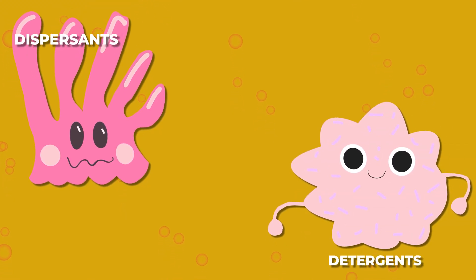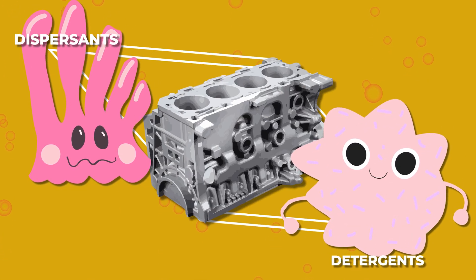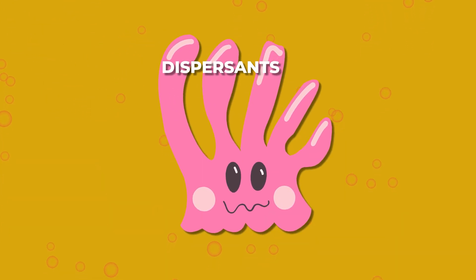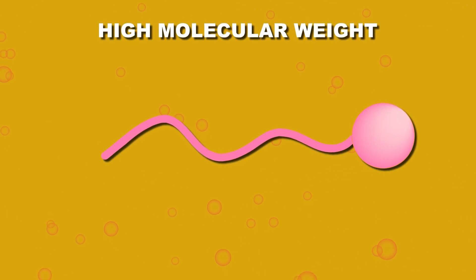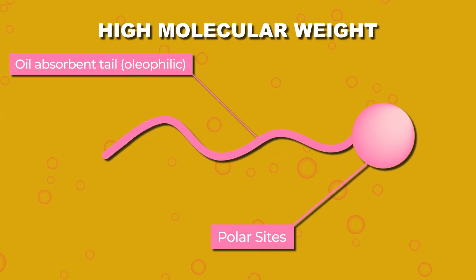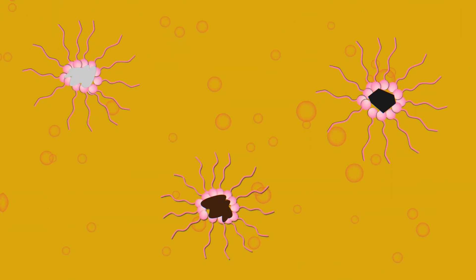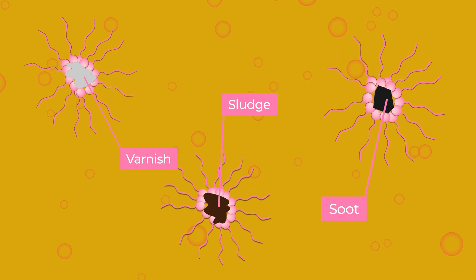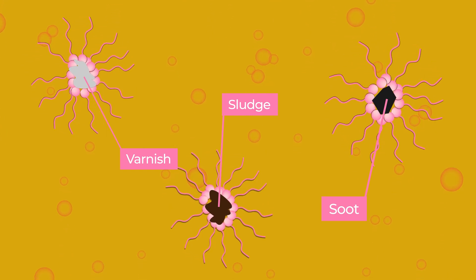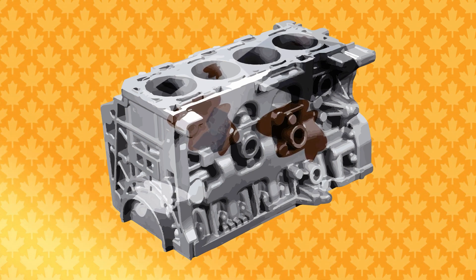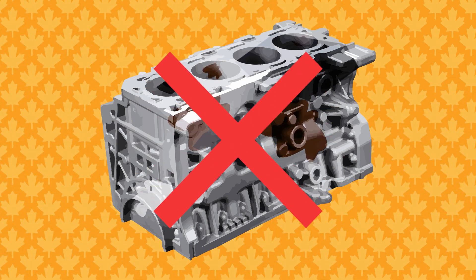First, we have dispersants and detergents. They work as a team to help keep your engine clean. Dispersants are high molecular weight components with long hydrocarbon chains and polar sites that function to disperse sludge, varnish, and soot in oil. Ultimately, keeping these contaminants from forming harmful deposits on metal surfaces in your engine.